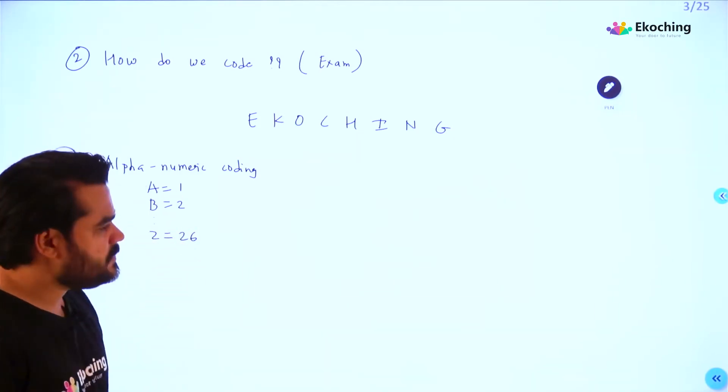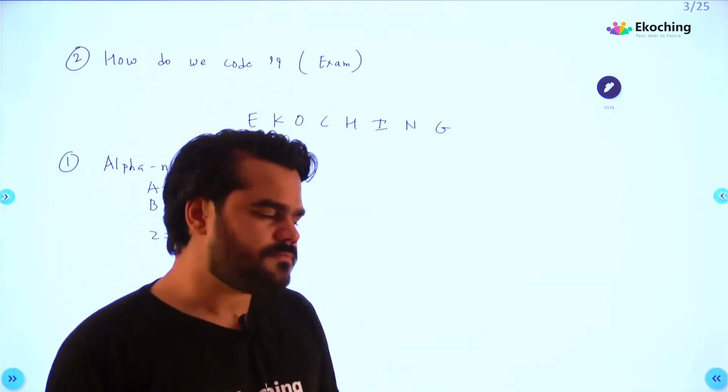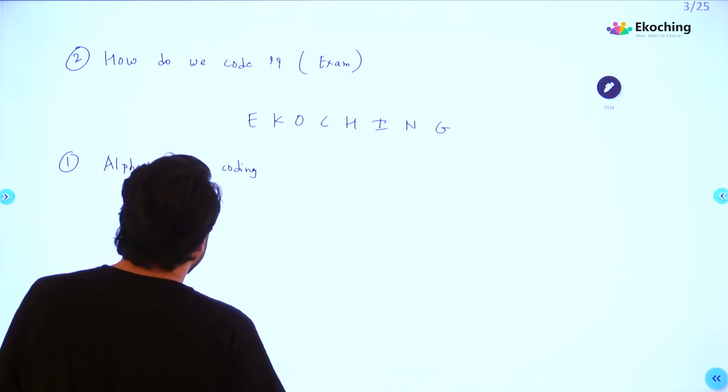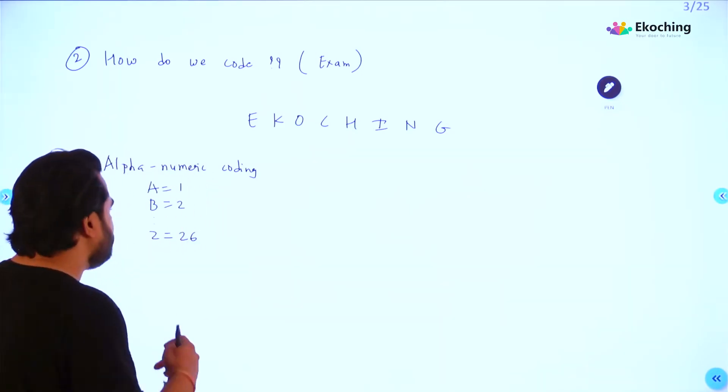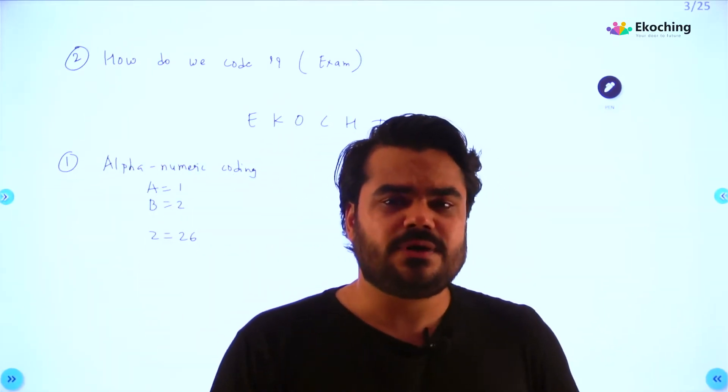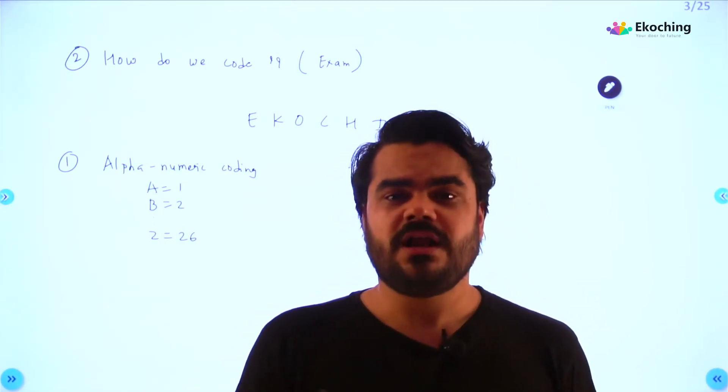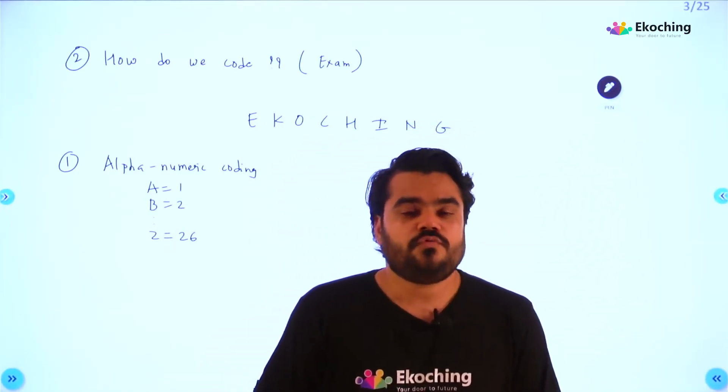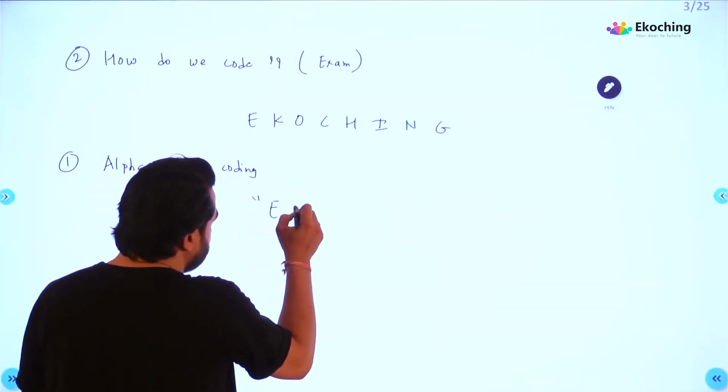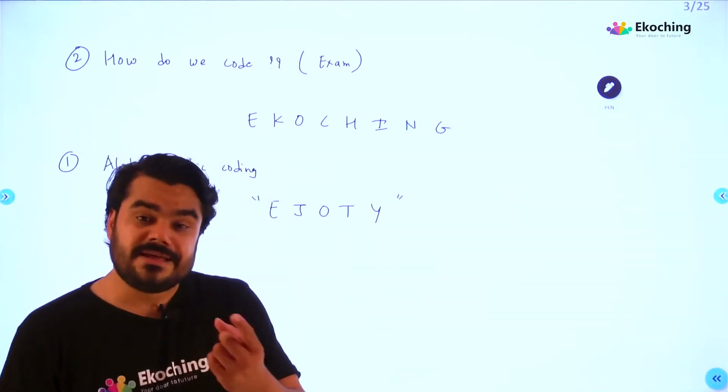So what is alphanumeric coding? For example, let's say if I say A is 1, B is 2, Z is 26. It's very easy to code or decode. But it's still a valid way to code. Okay, fine. Suppose I tell you that A's rank is 1, B's rank is 2, Z will be 26. But suddenly I ask you, what will T be? So first you will do A, B, C, D, E, F... You'll sit and write the whole alphabet. So that you don't have to take that trouble, you can remember this word: EJOTY.